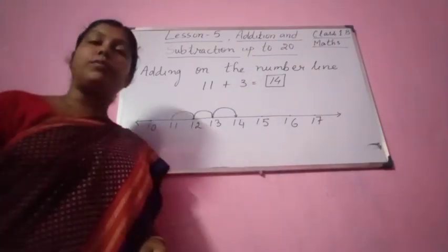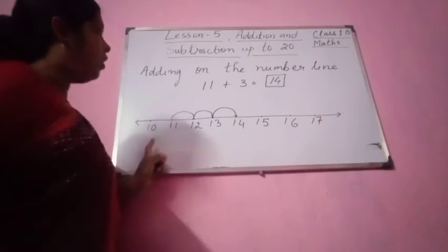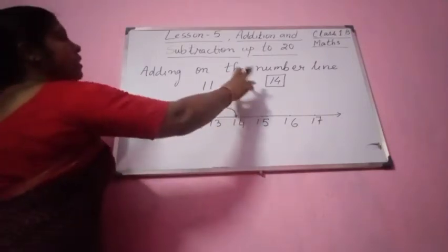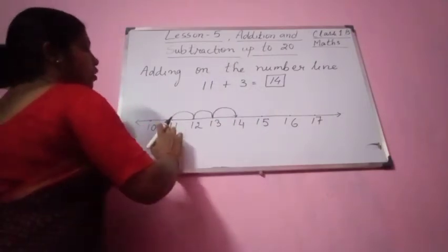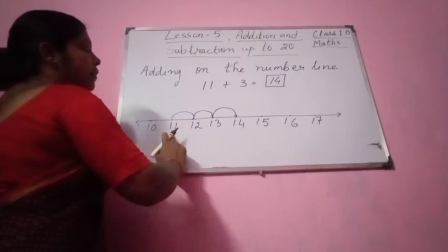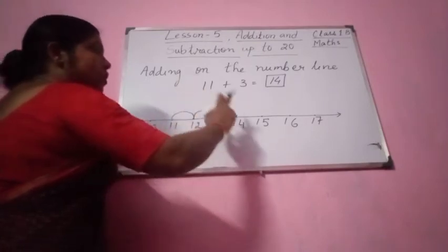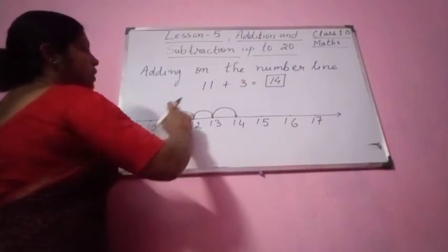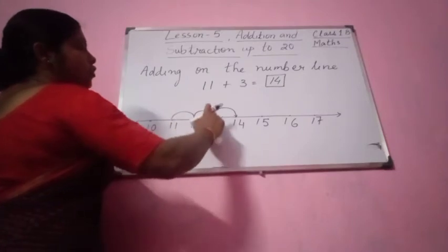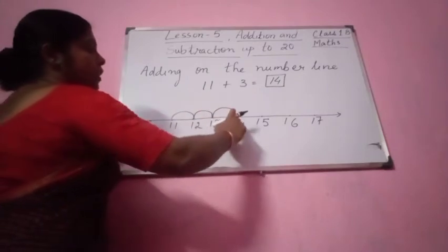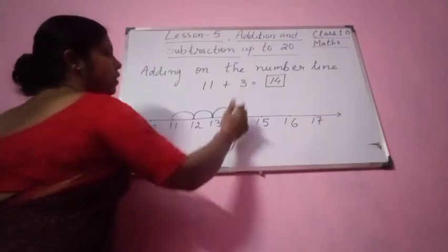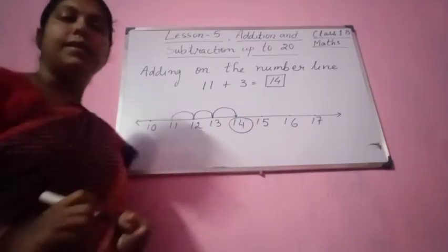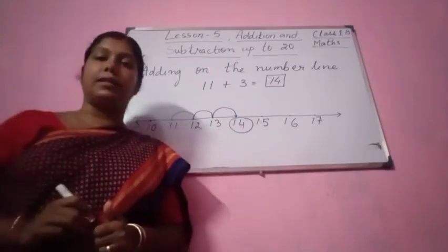So in this way you can do it, my dear students. I hope you have understood. 11 plus 3 equal to 14. From 11 we are going more 3 places — 1, 2, 3. 3 places we are going. See here: 11 plus 3 equal to 14. This is the answer.